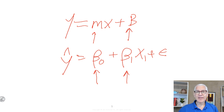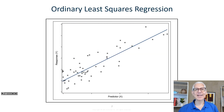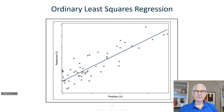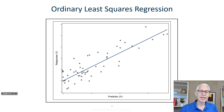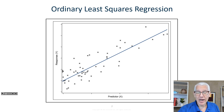The method that's going to be used is called ordinary least squares regression. Ordinary least squares regression is basically going to work like this: if we think about it, let's suppose that my response variable — the thing that I'm trying to predict — is something like sales, as I was talking about earlier.